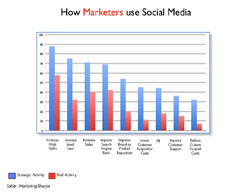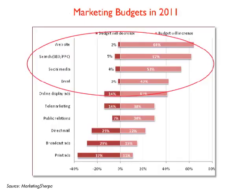According to a Marketing Sherpa study, businesses are using social media for a wide range of purposes — increasing website traffic, lead generation, increasing sales, improving search engine rank, enhancing their brand, lowering customer acquisition costs, public relations, and improving or reducing customer support costs. A large amount of attention is being directed toward driving traffic to websites, and we're going to find out why that is and why it's important.